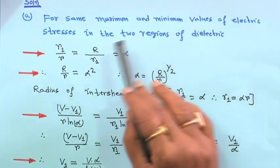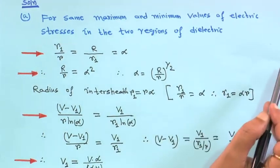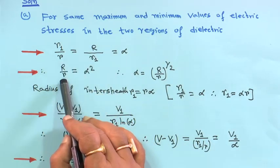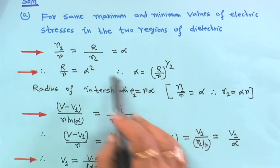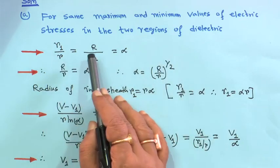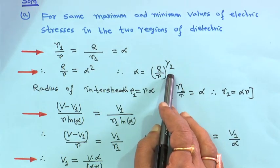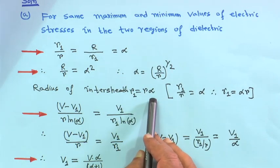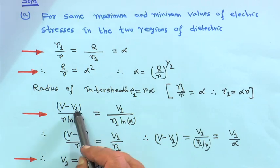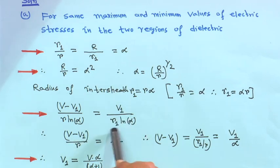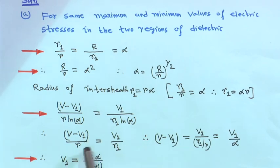For the same maximum and minimum stresses in both layers, the condition is: R1/r = R/R1 = alpha. Therefore, capital R/small r = alpha squared, so alpha = sqrt(R/r). The radius of the intersheath is r1 = r·alpha. Using the voltage formula: (V − V1)/(r·ln α) = V1/(r1·ln α), so ln α cancels giving (V − V1)/r = V1/r1.